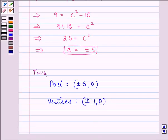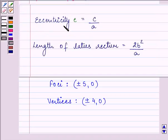Eccentricity, that is e is equal to c upon a, that is 5 upon 4.